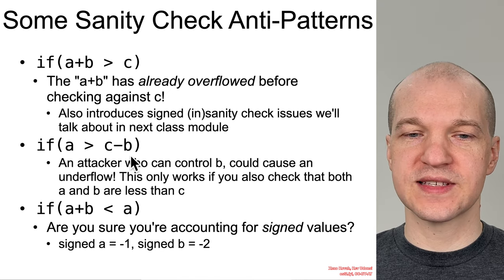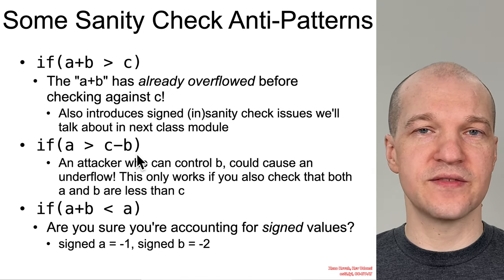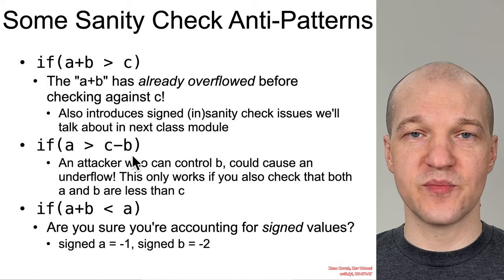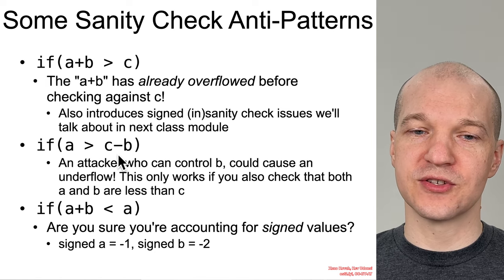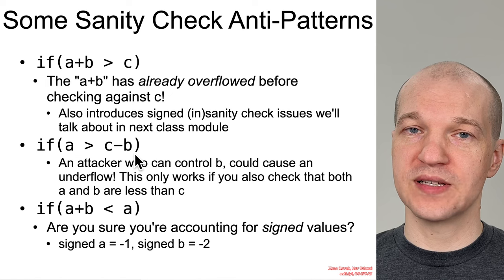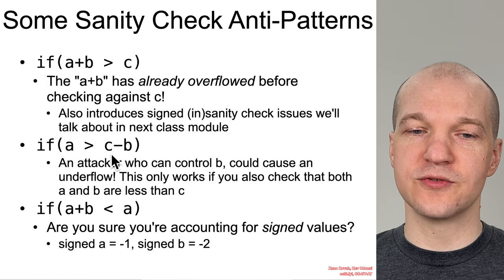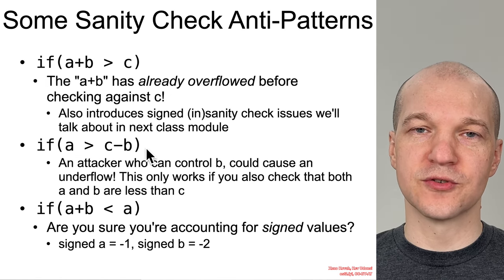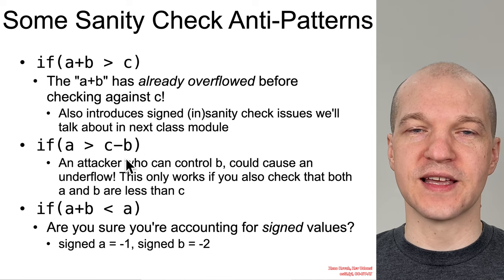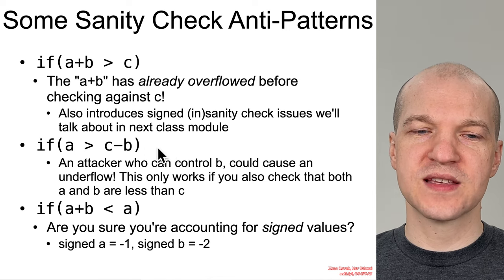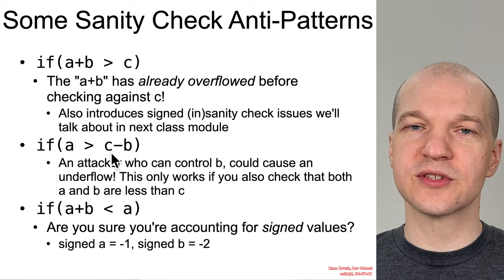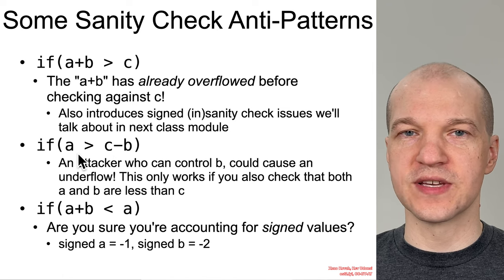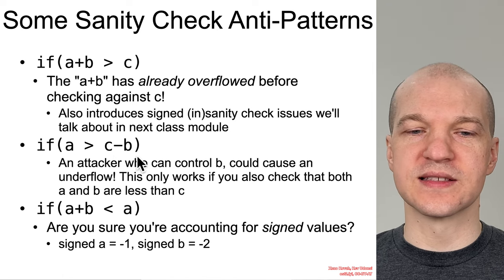The problem with this is that it is insufficient, because if B is attacker-controlled, then they could just set it to a big number, which consequently will lead to a small minus big integer underflow, and this sanity check will be bypassed as well. So something like this only works if you're adding in a whole bunch of extra sanity checks like: is A less than C and B less than C.